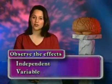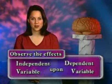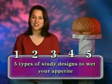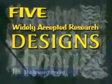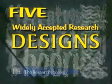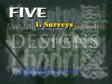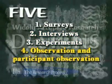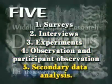How are we going to study the speeding rate of drivers in red cars? We've got to figure out how to observe the effects of the independent variable upon the dependent variable. We've got five choices to choose from — five types of study designs. The five most widely accepted research design types are surveys, interviews, experiments, observation and participant observation, and secondary data analysis.